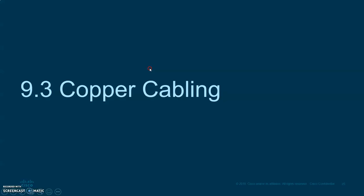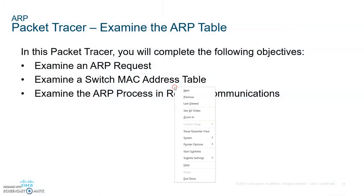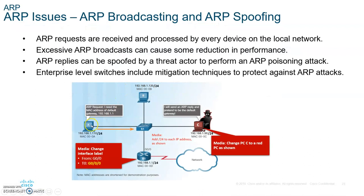Going back one more time: what happens if host A wants to talk to somebody outside on the internet? They already got his IP address from the DNS server. They create the packet, put it into a frame, and put their MAC address on it. Host A doesn't know that that IP address is on the internet — he still thinks it's somebody on the local LAN. So he sends out an ARP request to everybody: whoever has this IP address, give me your MAC. Nobody responds. Then, by default, he requests the ARP of his default gateway, which gives back its MAC address, and he sends the frame to the default gateway to go outside.